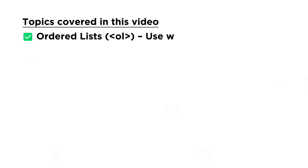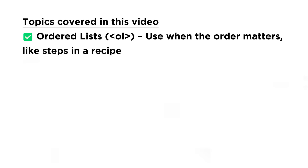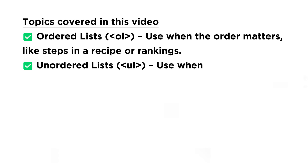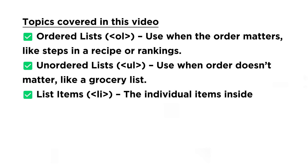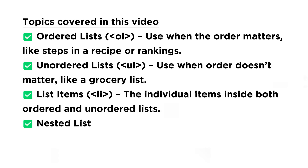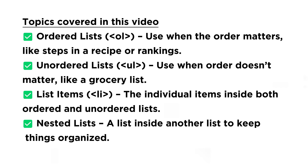Topics covered in this video: ordered lists — `ol` tag, used when the order matters, like steps in a recipe or rankings; unordered lists — `ul` tag, used when order doesn't matter, like a grocery list; list items — `li` tag, used for individual items inside both ordered and unordered lists; and nested lists — a list inside another list to keep things organized.